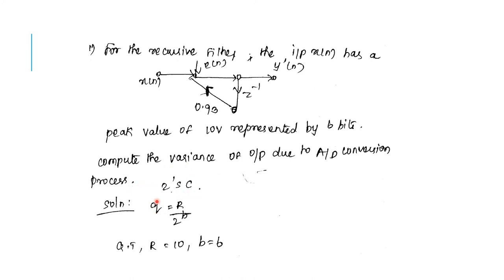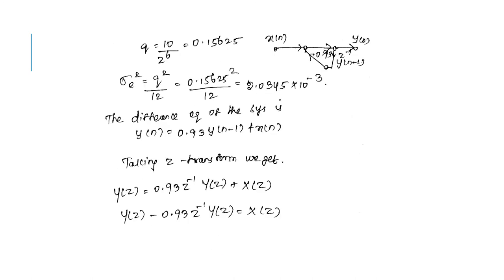For two's complement, Q equals R divided by 2 to the power B. The range R is given as 10 volts and B is 6. Substituting these values, we find Q. Then sigma E squared equals Q squared divided by 12, using the Q value just obtained.